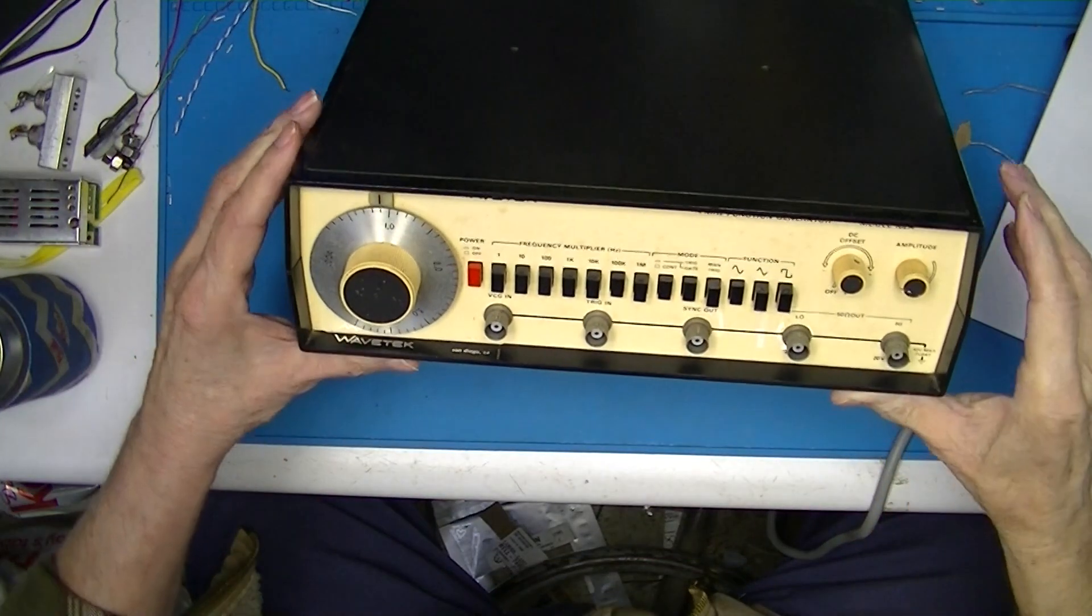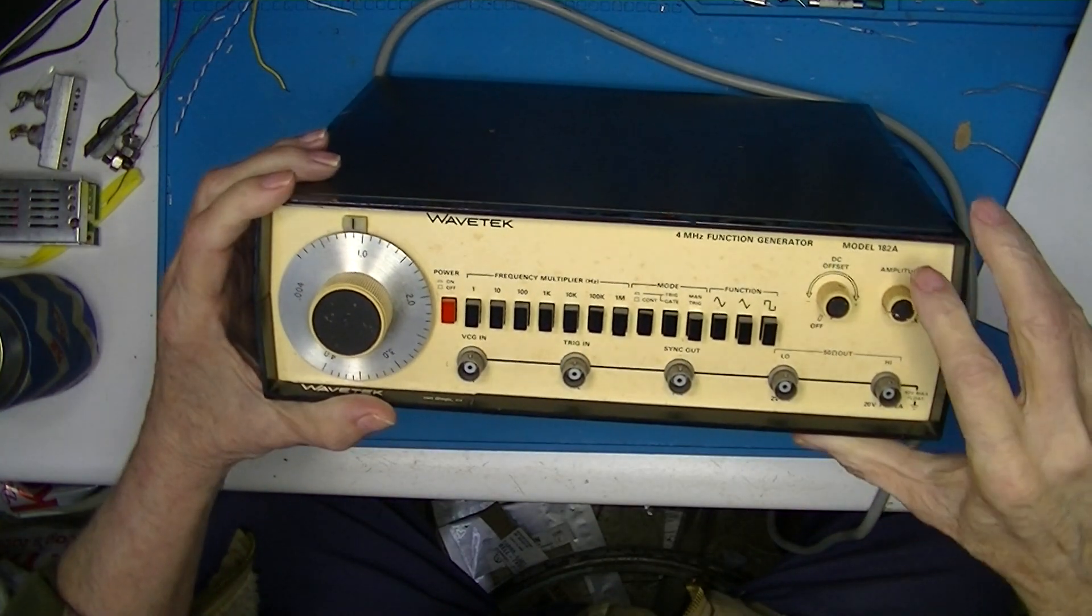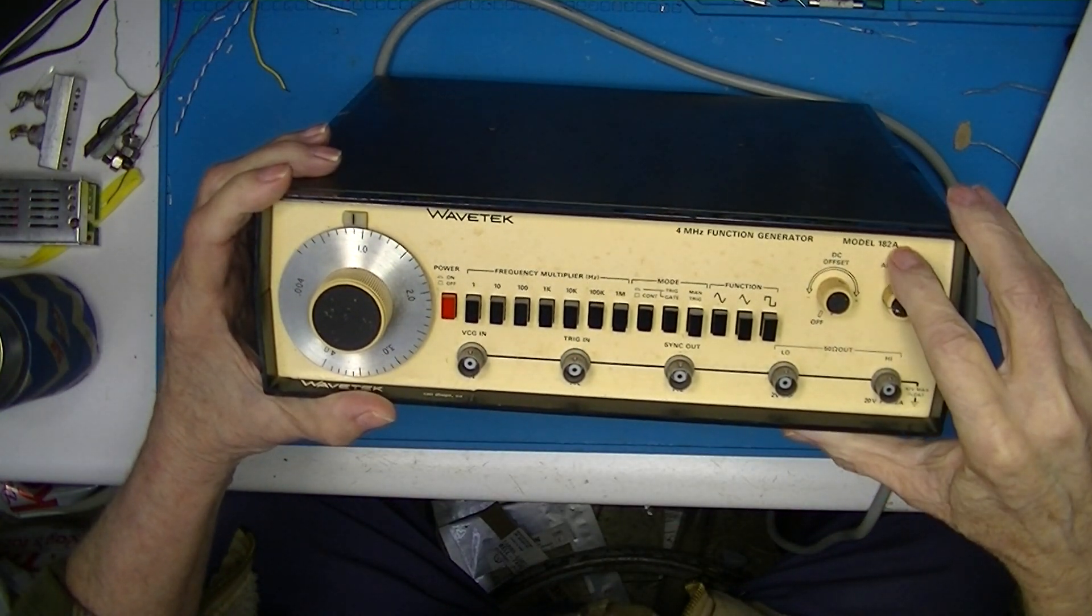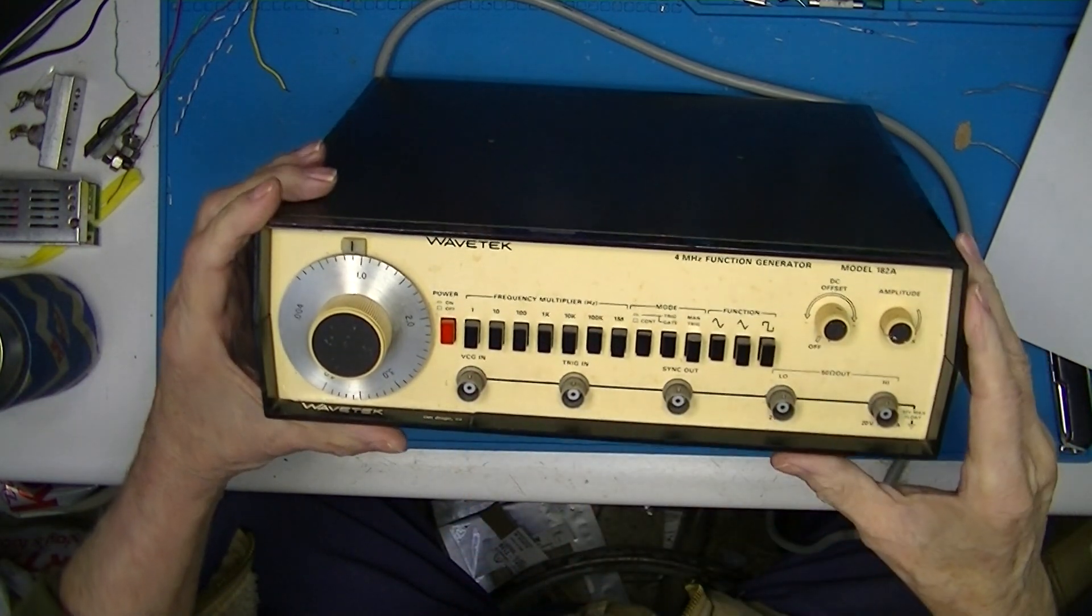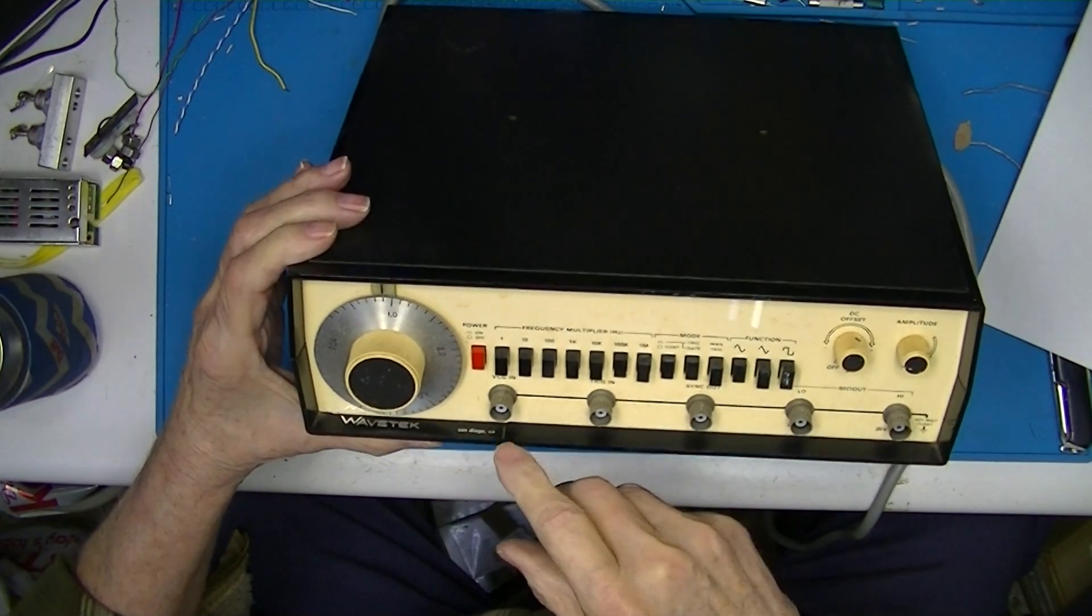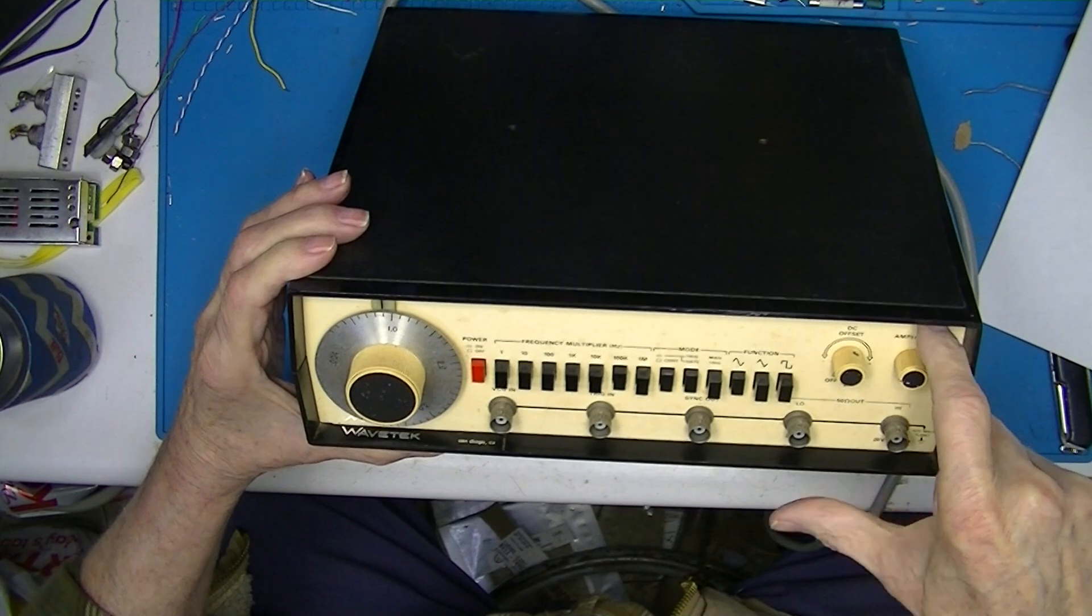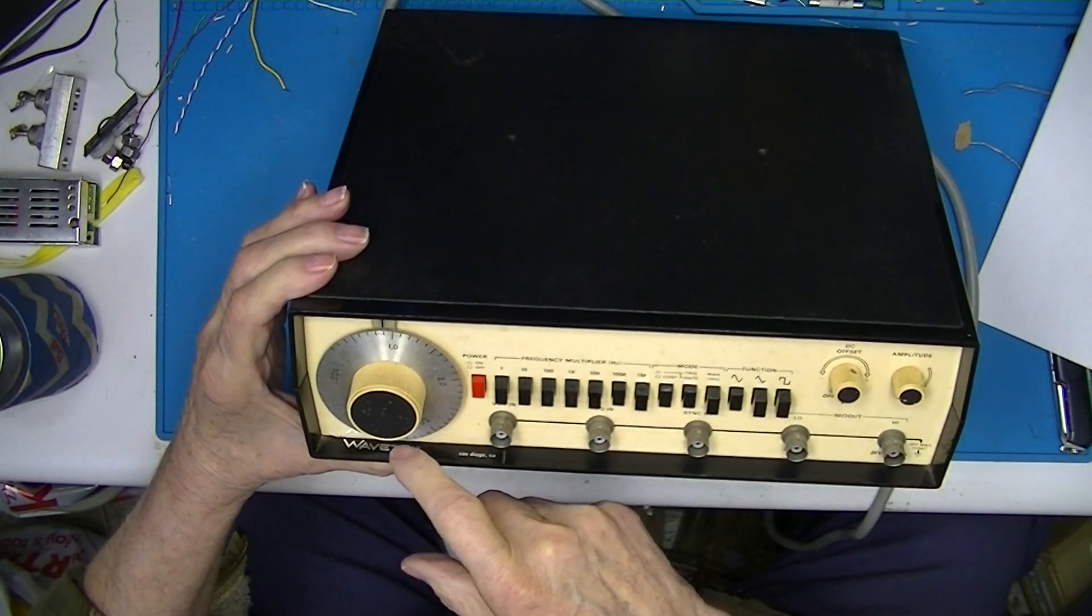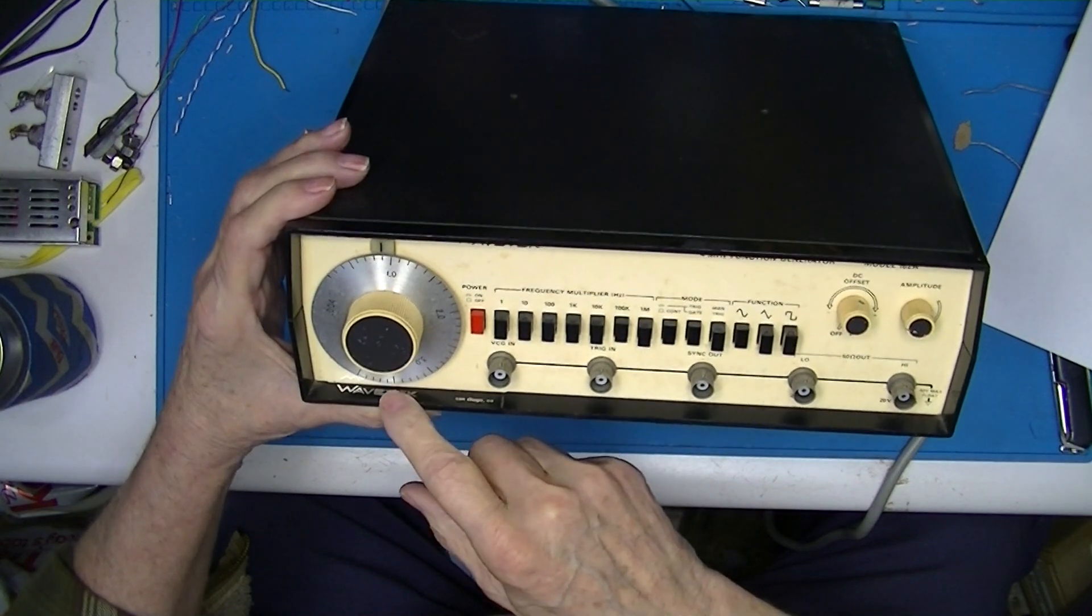So this is another WaveTech 182 but this is the A model. Appears to be cosmetically pretty nice. Look at this little feature here - absolutely worthless. On the lower shelf of the front enclosure it says WaveTech. That means nothing of course.